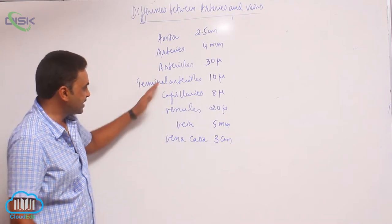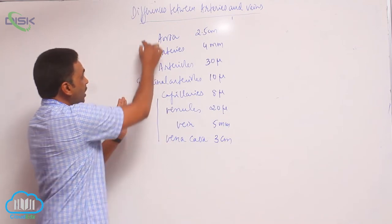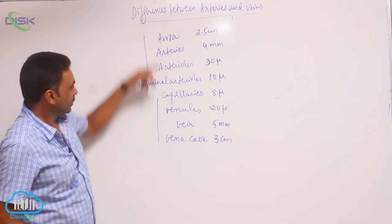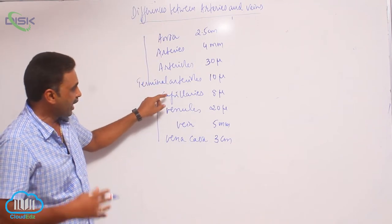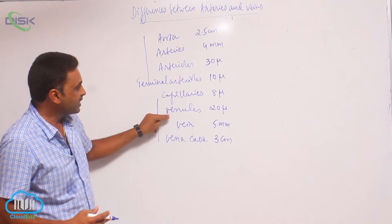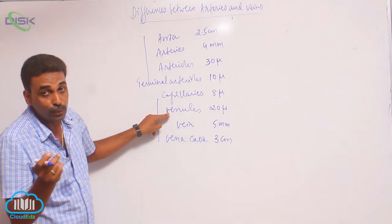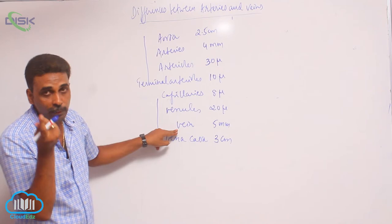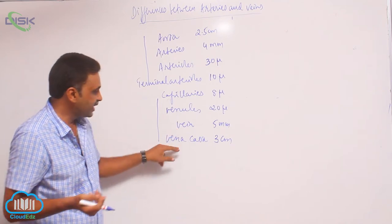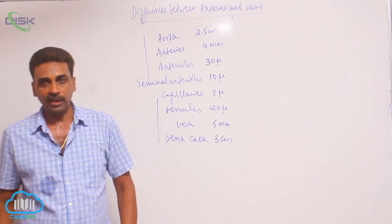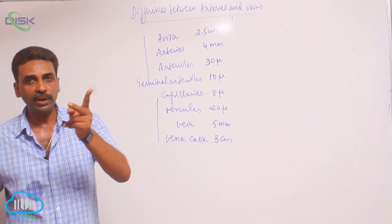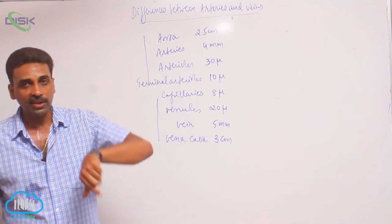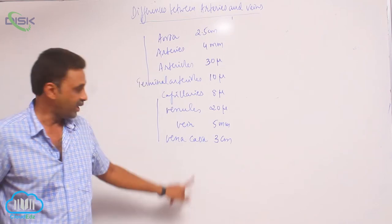This is the venous system here; that is the arterial system. In the venous system, a group of capillaries combine together to form venules, a group of venules combine together to form a vein, and a group of veins combine together to form the vena cava. There are two vena cavas — one is the superior vena cava and the other is the inferior vena cava.